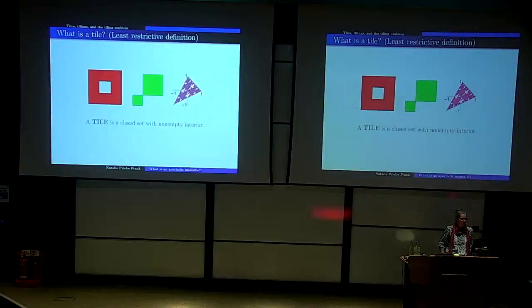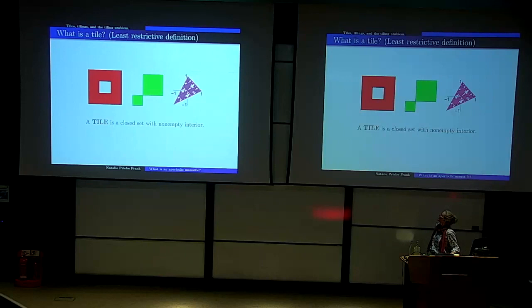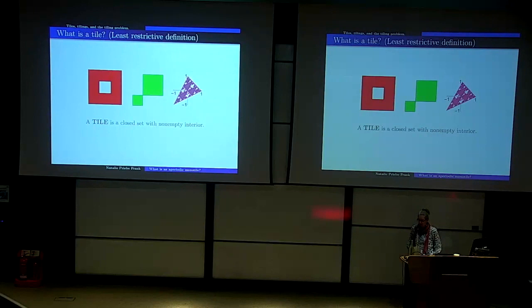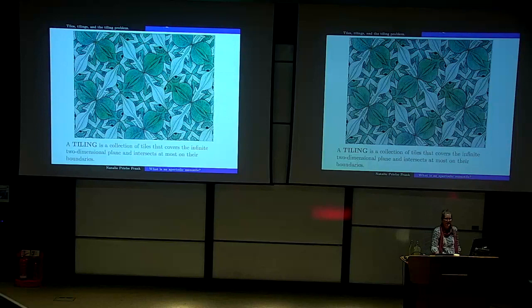A less restrictive definition would be any kind of closed set that has an inside to it. So it could have a hole — this red square with a hole could be a tile. There could be a cut point, or it could be filled with holes that would be filled in by another tile. Those are sort of two extremes of what you might consider a tile to be. I'm exclusively going to be talking about tilings of the infinite Euclidean plane.